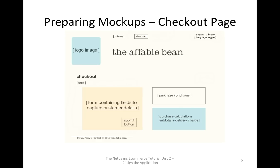In the checkout page, the checkout page collects information from the customer via a form. The customer fills in their information and then clicks the submit button. This page also displays purchase conditions and summarizes the order by providing calculations for the total cost, including subtotal plus delivery charge. The user is also able to send personal details over a secure channel.